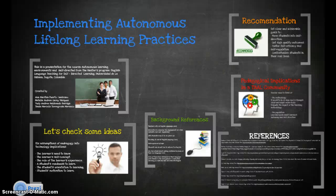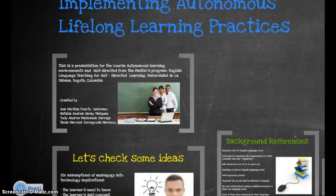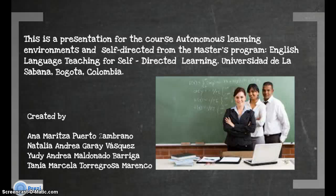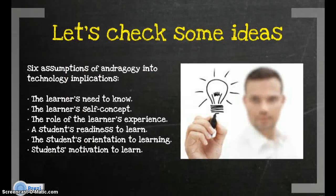Implementing Autonomous Lifelong Learning Practices. A learning theory explains how it is possible to see the changes that a person experiences through the learning process. For our case, humanism is the theory. The learning process takes place when a person acts and fulfills their potential. Therefore, the student can become autonomous and self-directed. In the case of adult learning, it is possible to develop an andragogy theory.